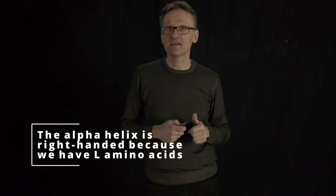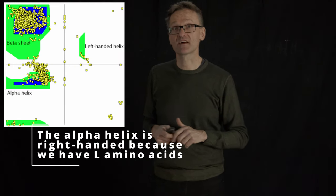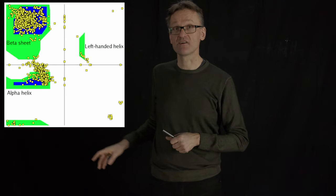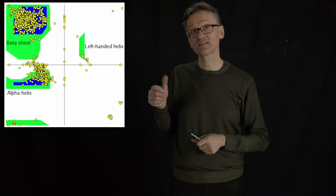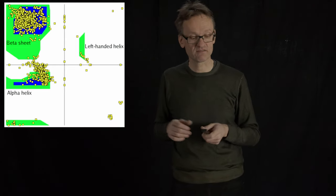Before going into math, let's look at where the alpha helix exists in the Ramachandran diagram. Of these three areas, it's going to be the area in the middle, slightly to the left, where we have the alpha helix.